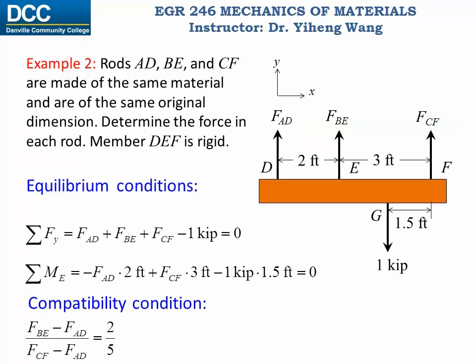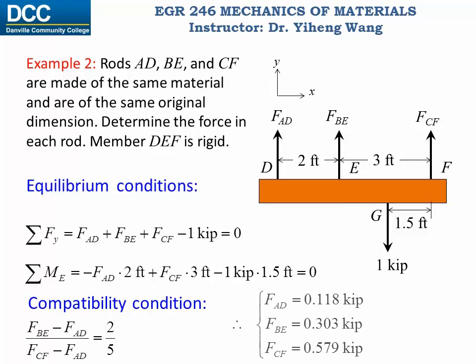Now we have three equations — two from the equilibrium conditions and one from the compatibility condition — and three unknowns: FAD, FBE, and FCF. Three equations, three unknowns, we can solve for all of them, and that's the answer.